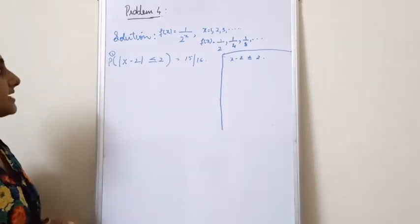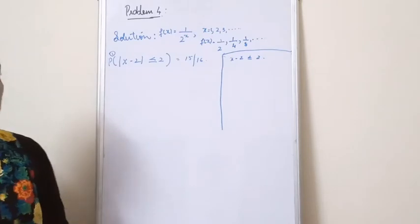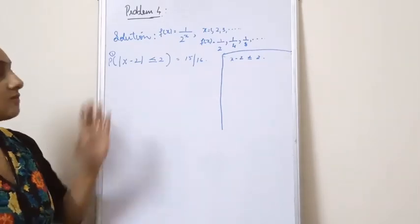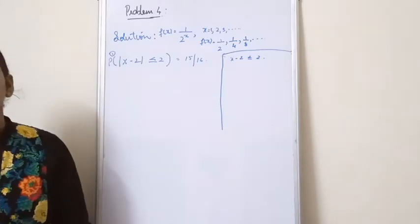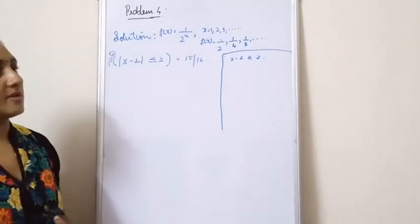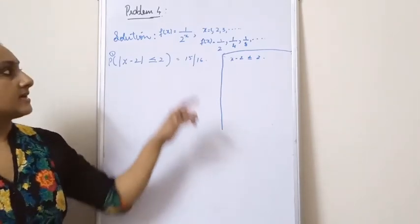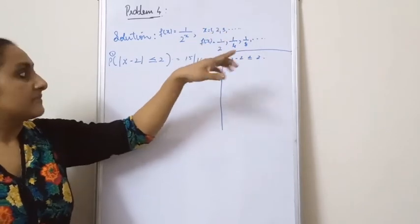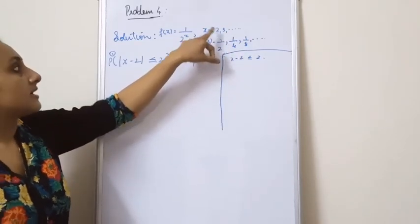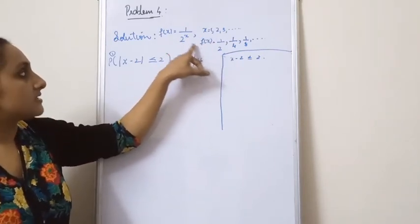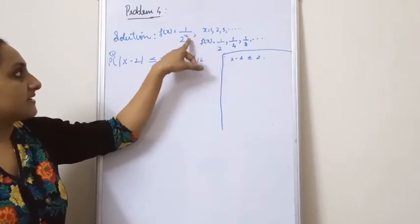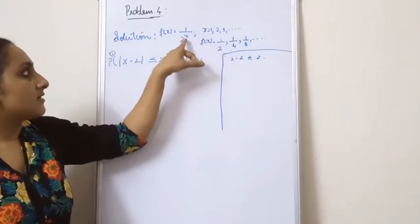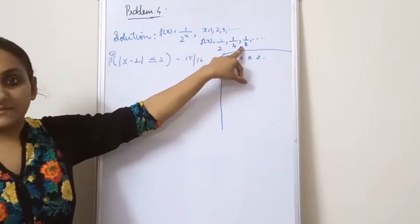In this question we have two parts. The first part is to prove that probability of |X minus 2| less than or equal to 2 is equal to 15 by 16. The second part is to find a lower bound for this probability. The density function is given as f(x) equals 1 by 2 raised to X, where X takes the values 1, 2, 3, etc. So f(1)=1/2, f(2)=1/4, f(3)=1/8, and so on.